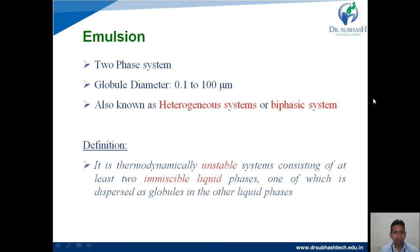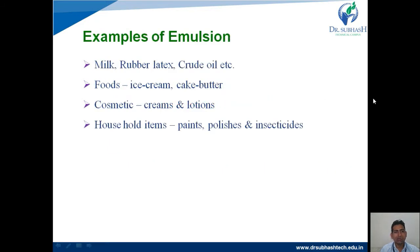Oil molecules always have a tendency to join with other oil molecules. That is why we can say emulsion is a thermodynamically unstable system. Some examples of emulsion — milk is the ideal example of an emulsion.